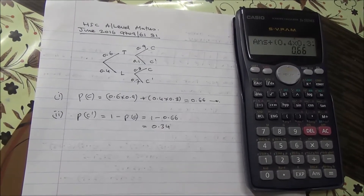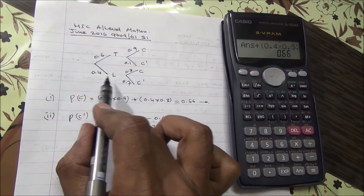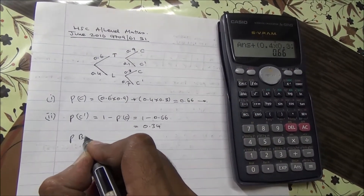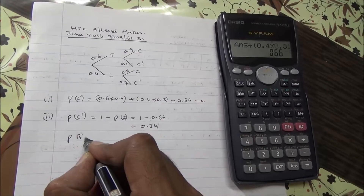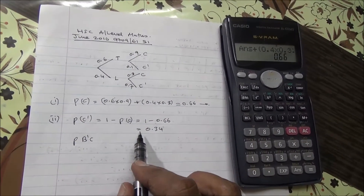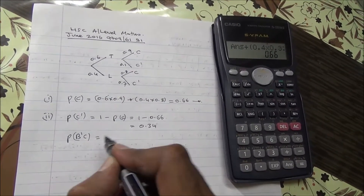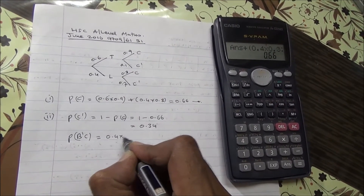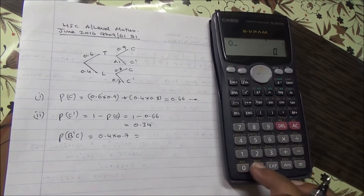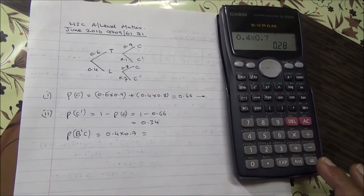We need 0.4 times 0.7 — the probability that the bus is not on time, meaning it's late, and then he doesn't get a cup of coffee, which is 0.7. So that's 0.4 times 0.7, and that's going to give us 0.28.